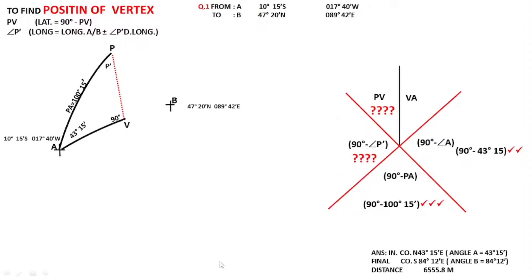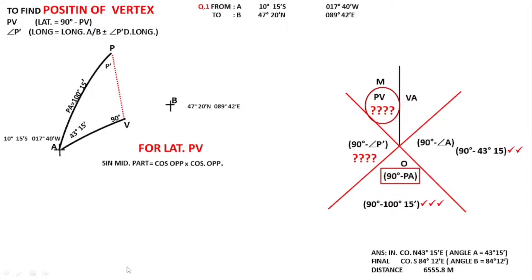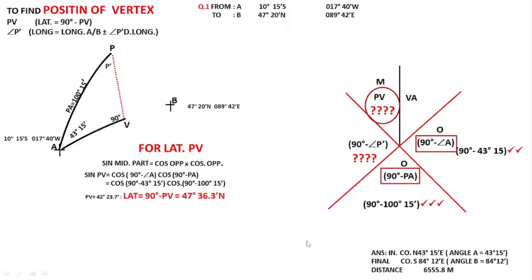When you are solving these questions, always use the things you have already solved — don't use things you are going to solve next, because whatever mistake you made earlier will be carried forward and you will be making more mistakes. So let us start with finding out PV. These two parts I know become opposite to the middle part, so I can use the formula: sign of middle part equals cos-cos of opposite parts. Substituting these values I get PV. I am not showing full calculations, but you should show all calculations in your examination. Here I have PV, and 90 minus PV is my latitude.